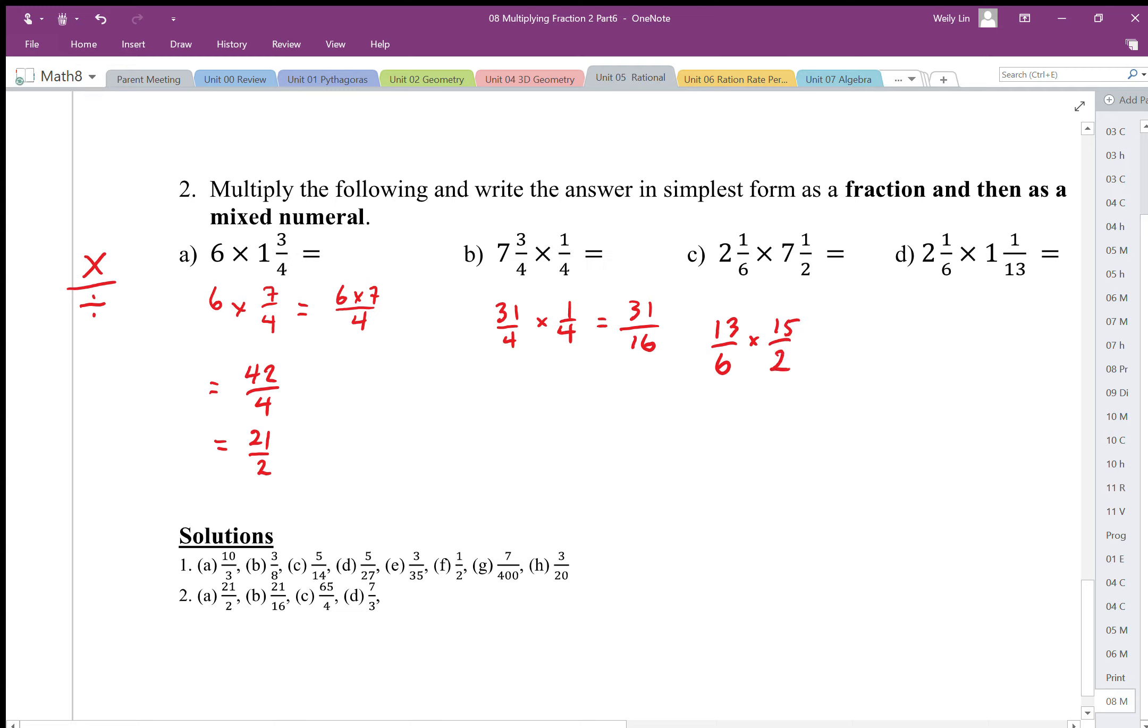Since we have times and divide here that share common factors, times 15 divided by 6 share common factor of 3, we can simplify that out.